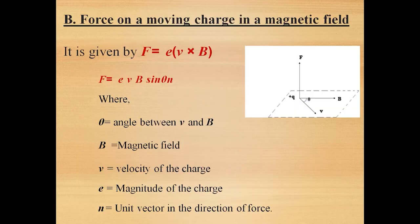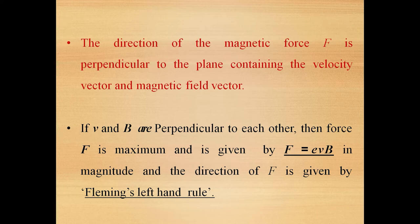We also discussed the effect of magnetic field on a moving charge, given by F = eV×B, or VB sinθ n-cap. This force will be maximum whenever the angle between the velocity and the magnetic field is 90 degrees — that is, when velocity and magnetic field are at right angles to each other — and the direction is given by Fleming's left hand rule. If velocity and magnetic field are in the XY plane, the force experienced will be perpendicular to that, along the Z direction.